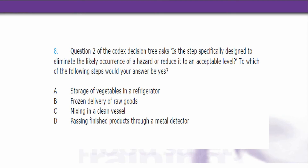Number 8. Question 2 of the Codex Decision Tree asks: Is the step specifically designed to eliminate the likely occurrence of a hazard or reduce it to an acceptable level? To which of the following steps would your answer be yes? A. Storage of vegetables in a fridge. B. Frozen delivery of raw goods. C. Mixing in a clean vessel. D. Passing finished products through a metal detector.